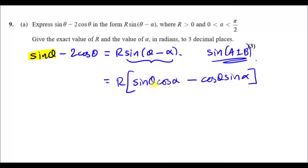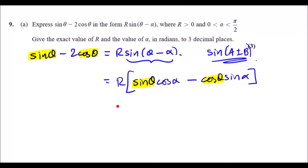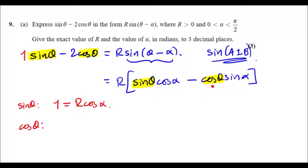Now we just match coefficients. You'll notice there's a sin θ term on the left equal to a sin θ on the right, and a cos θ on each side. For sin θ, the coefficient on the left is 1 and on the right is R cos α, so 1 = R cos α. For cos θ, the coefficient is 2 and on the right it's R sin α, so 2 = R sin α.